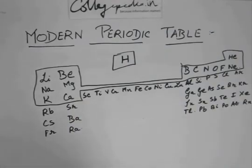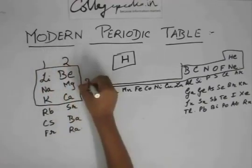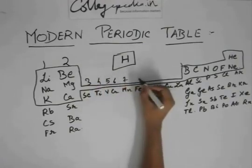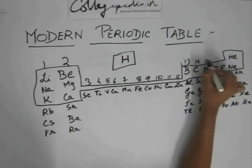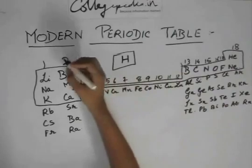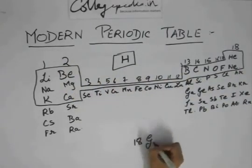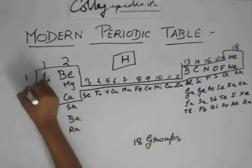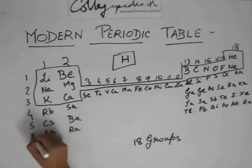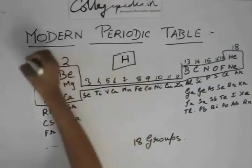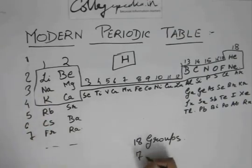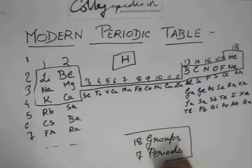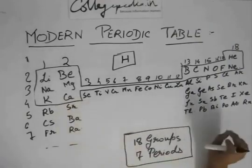So in the periodic table, basically there are 18 groups and 7 periods.